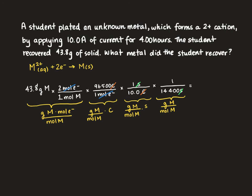We get a molar mass of 58.70 grams per mole. Looking at our periodic table, this molar mass is closest to nickel. Since nickel forms a 2+ ion, it's safe to say that the student recovered the solid metal nickel in her experiment.